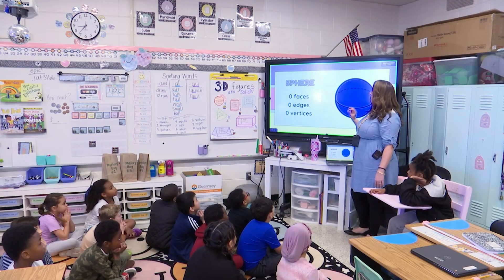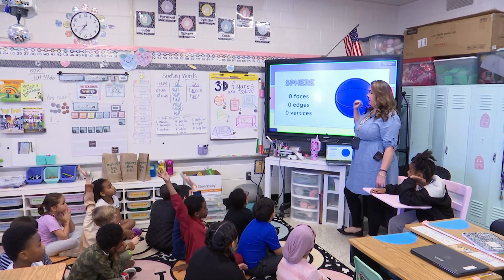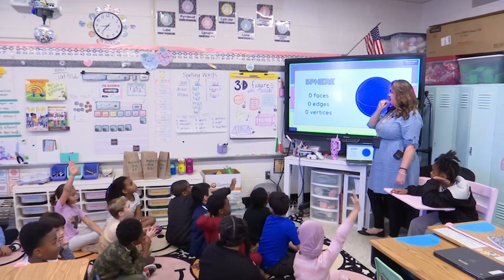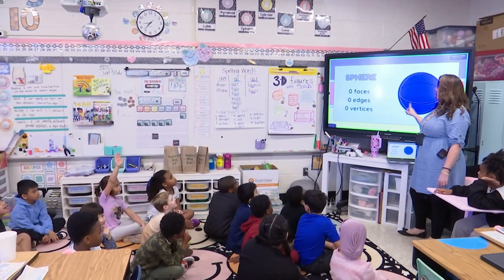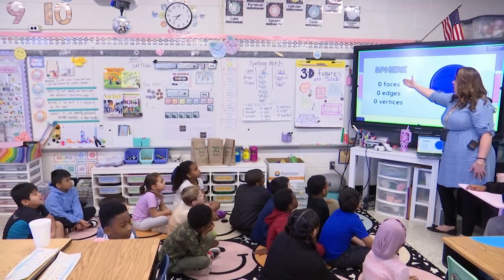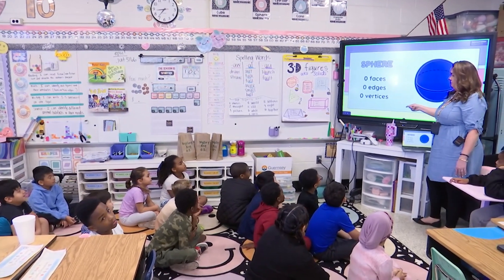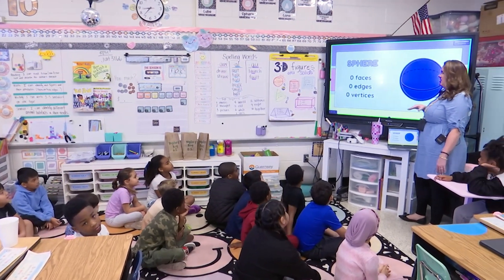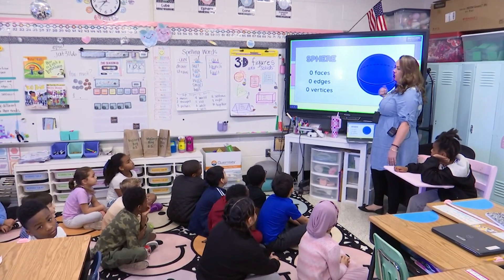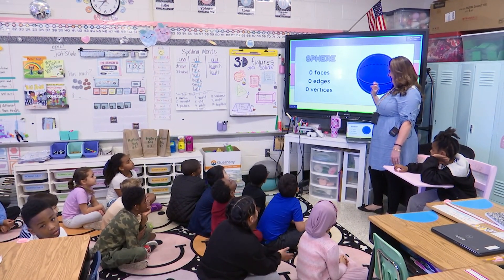Let's review. Who remembers what this shape is? A sphere. We can remember that one because it has zero faces, zero edges, and zero vertices. It's round. A lot of us like to call it a ball, but it's a sphere.